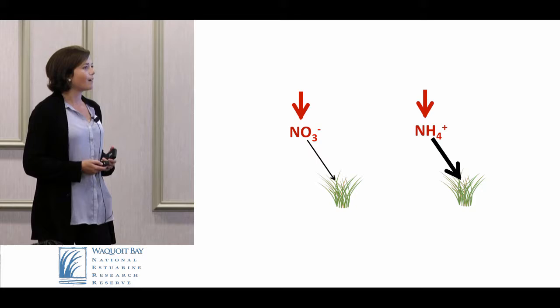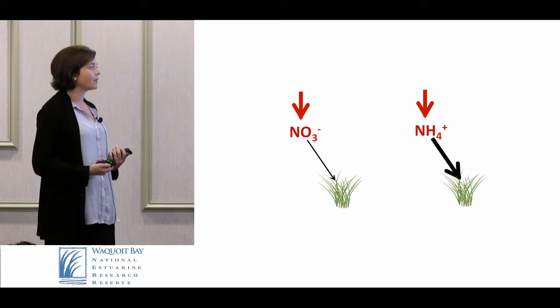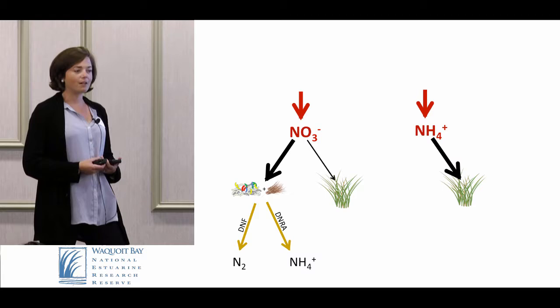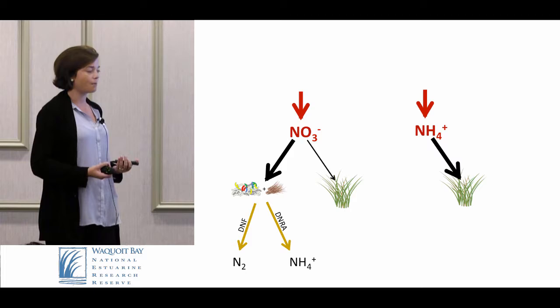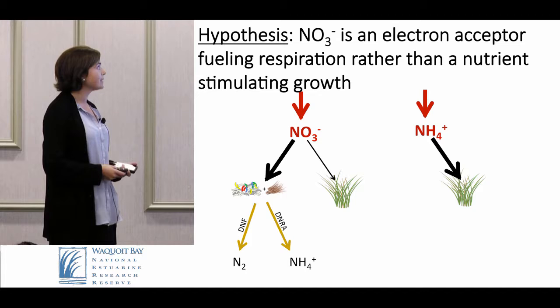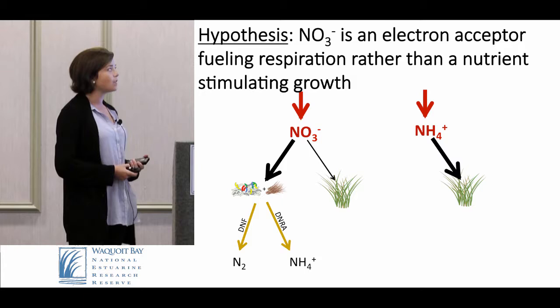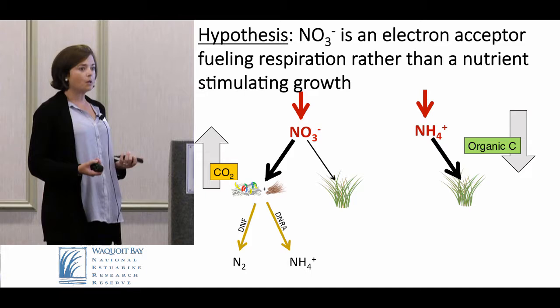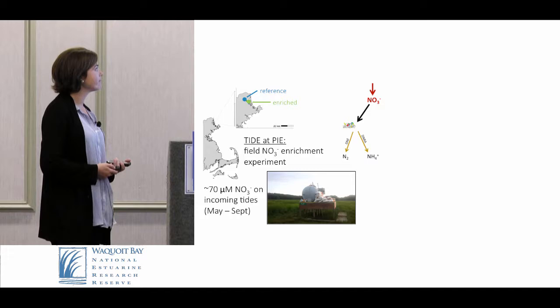We are hypothesizing that unlike ammonium, which plants take up readily, when you add nitrate you can be stimulating decomposition. Nitrate, like sulfate, is used instead of oxygen under anaerobic conditions by microbes to respire organic matter — through processes like denitrification and DNRA. So we hypothesize that nitrate is used more readily as an electron acceptor fueling respiration, rather than as a nutrient stimulating growth. Adding nitrate may therefore release more CO2, as opposed to adding ammonium, which may promote organic carbon or CO2 fixation.